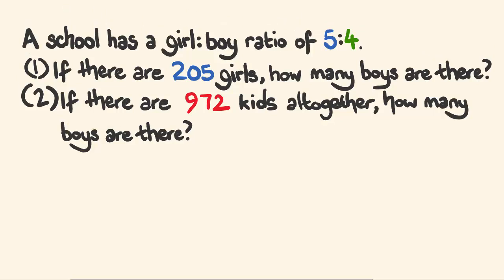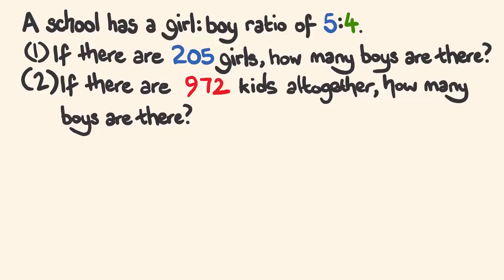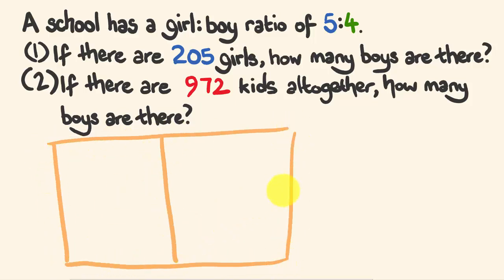So for both of these, we're going to draw up our box. Alright, so I'll draw it up here. And this will be good, because it will keep everything nice and ordered. So we have a 5 girls to 4 boys ratio. And now we have, over here, 205 girls. Alright, so everything's nice and lined up. And what we do,